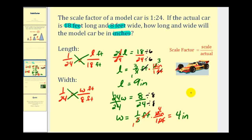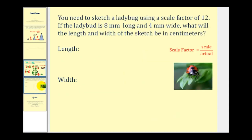So the scaled dimensions are nine inches by four inches. Let's try another one. Here we need to sketch a ladybug using a scale factor of twelve, which is a ratio of twelve to one. If the ladybug is eight millimeters long and four millimeters wide, what will the length and width of the sketch be in centimeters? Once again notice we have a change in units — millimeters to centimeters.